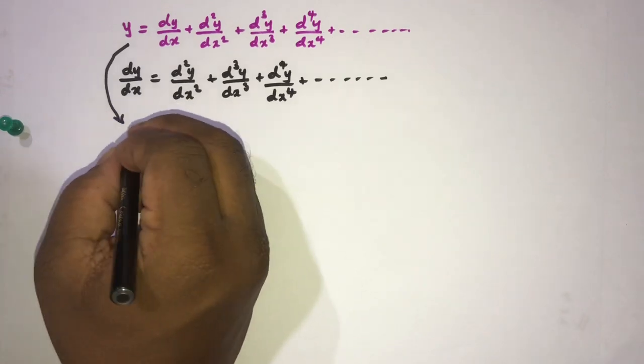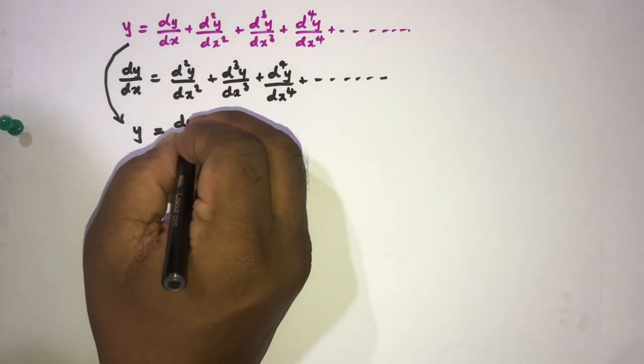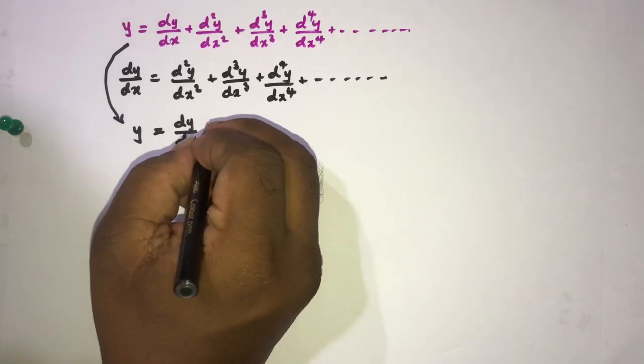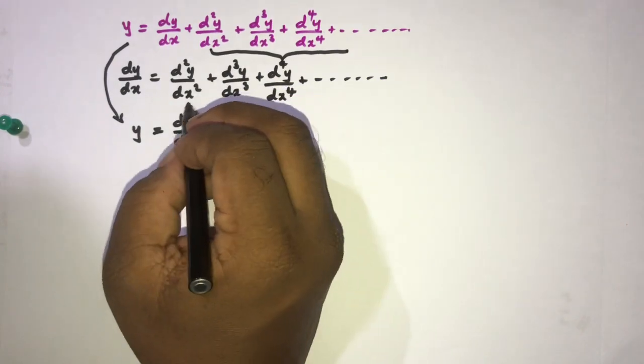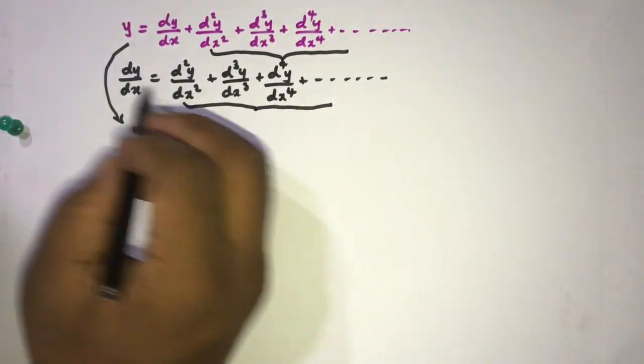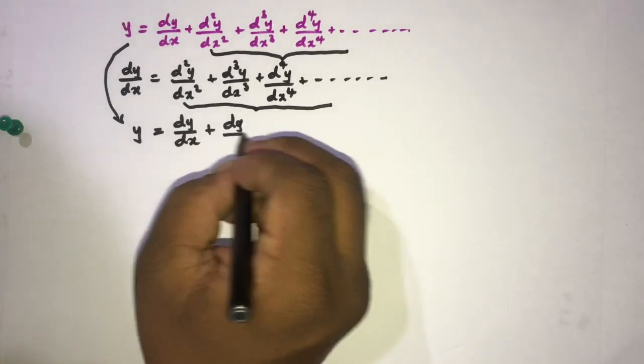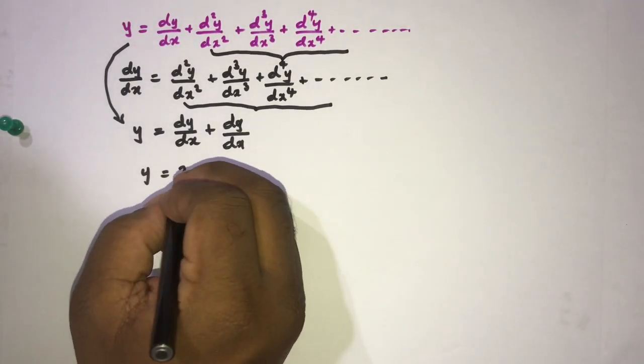Then, if we take our equation y equals first term dy by dx plus, now instead of this part we know here also same part, we can write dy by dx. So we have y is equal to two times dy over dx.